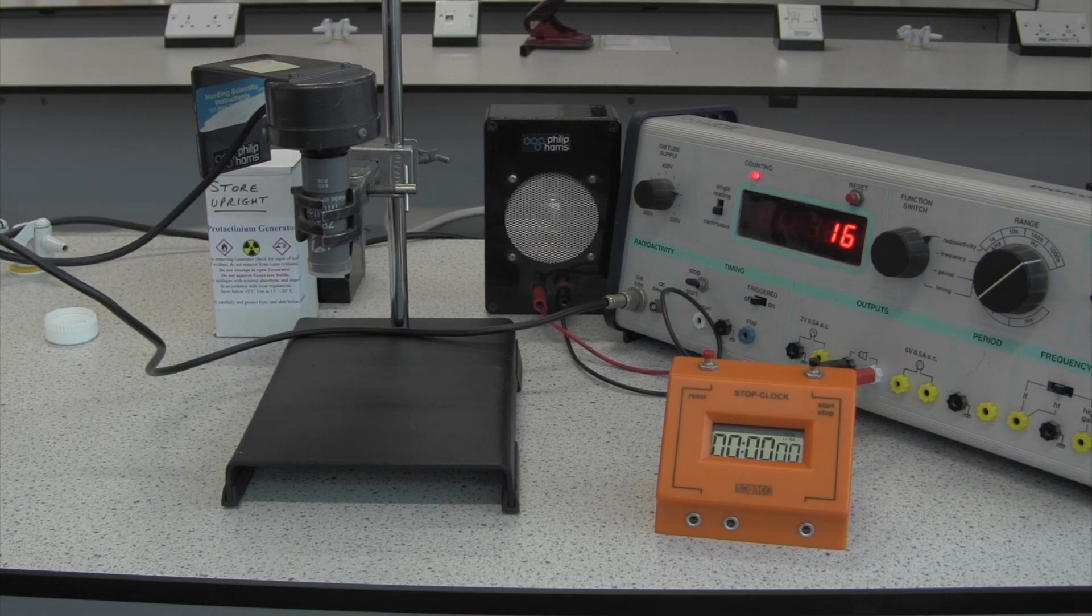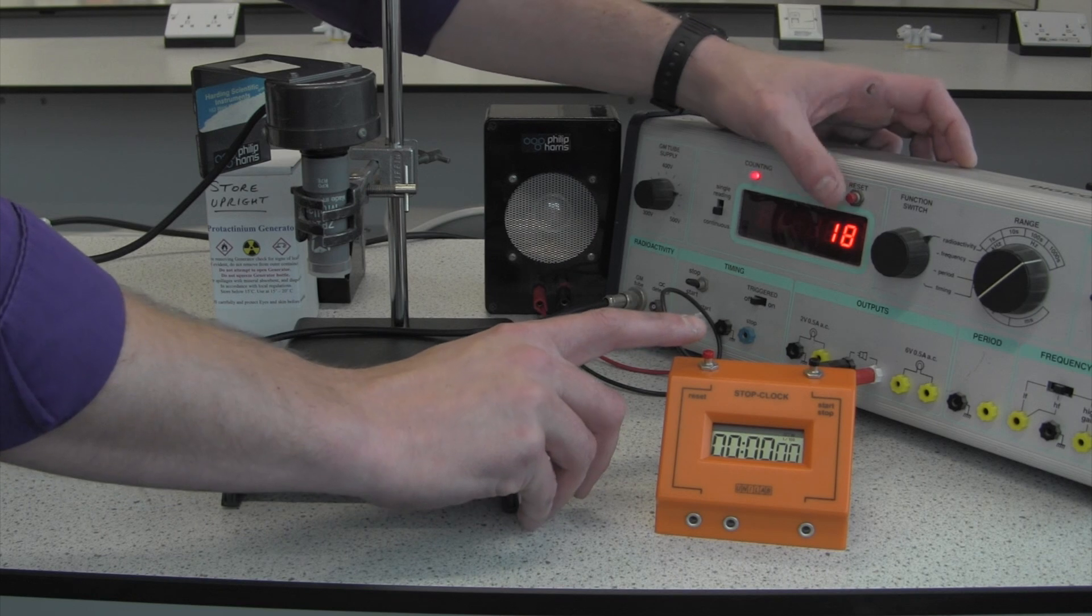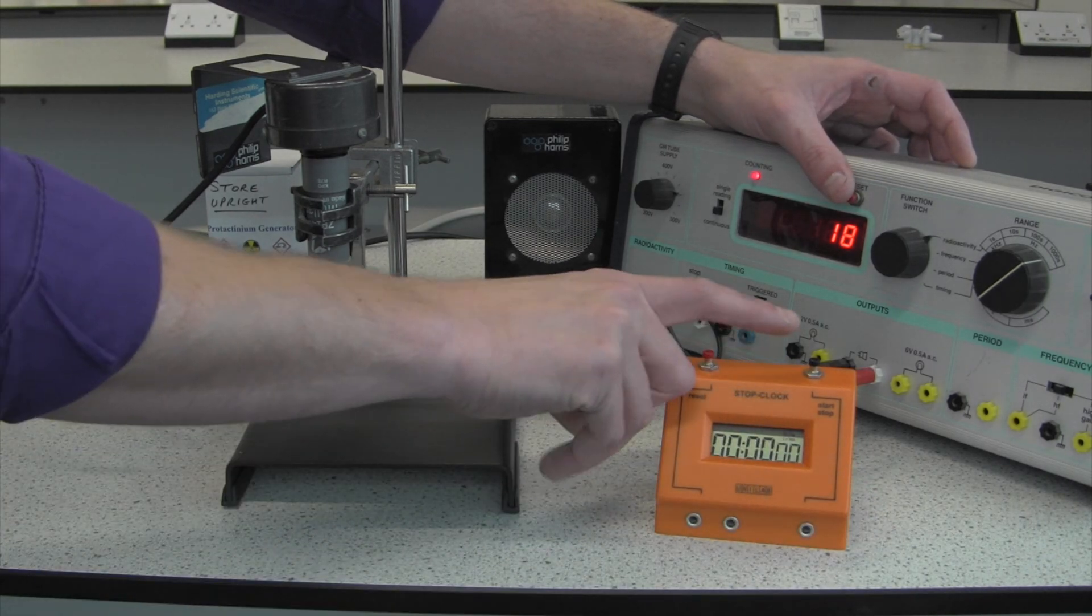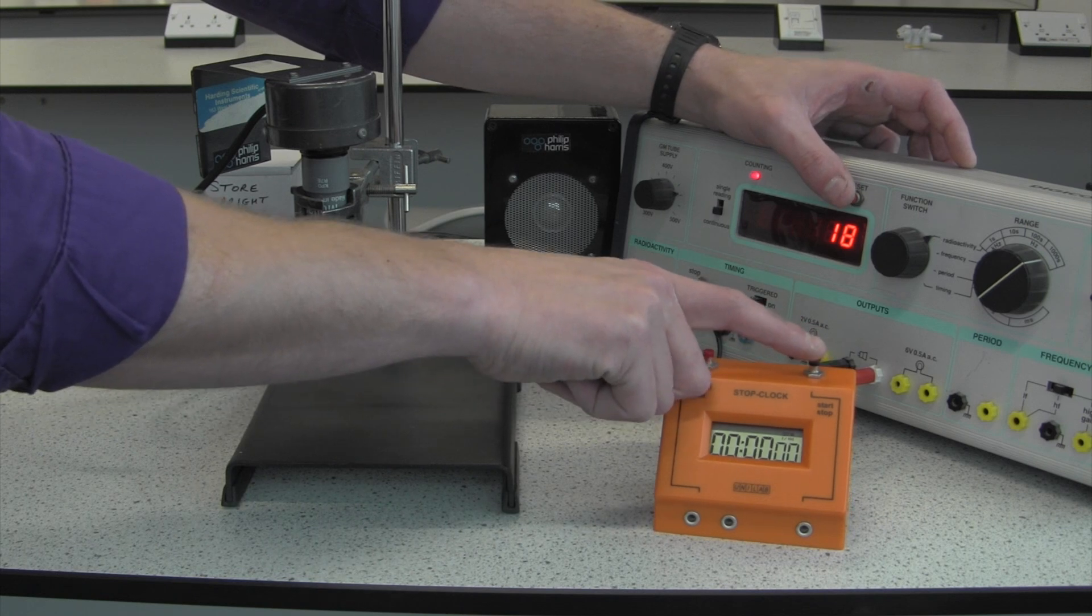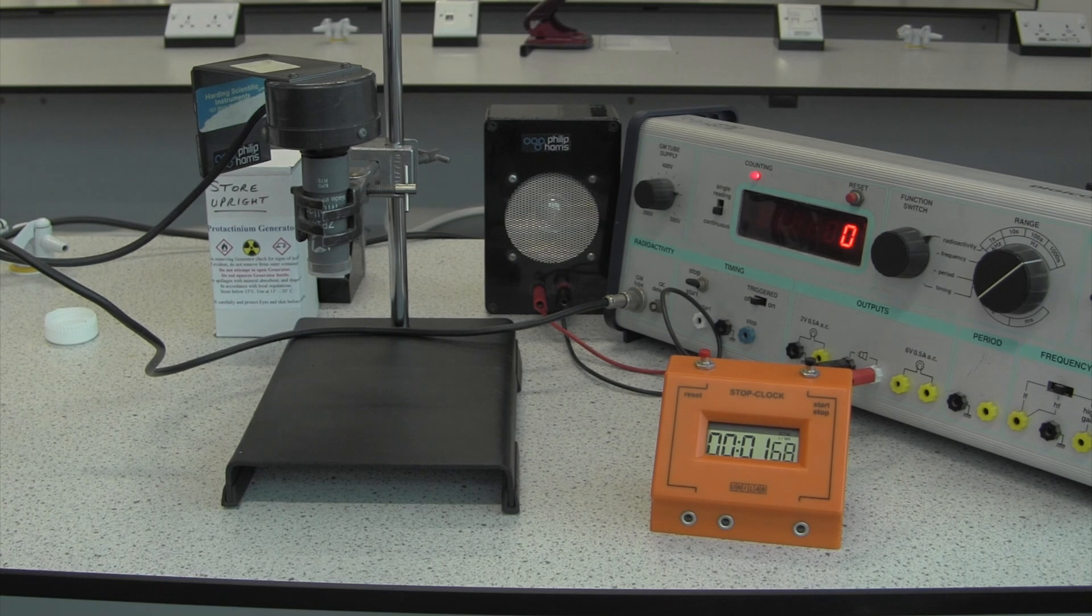So now we're ready to take that background radiation count. And to do this, I'm going to reset our stop clock. And we're going to reset the Geiger counter and simultaneously start the stop clock. So three, two, one. And we're going to measure the count over a two minute period.